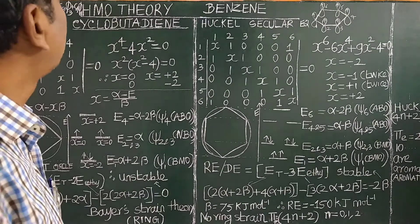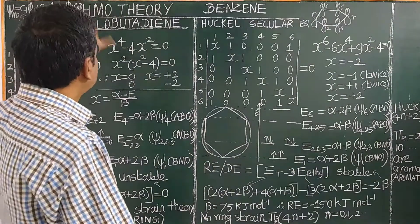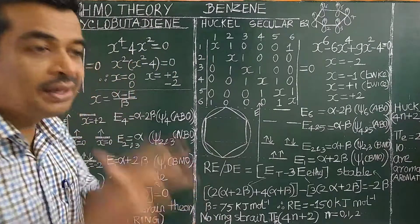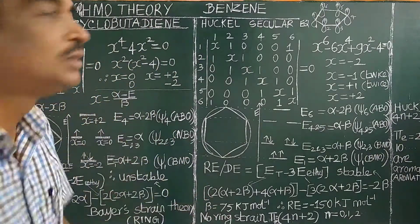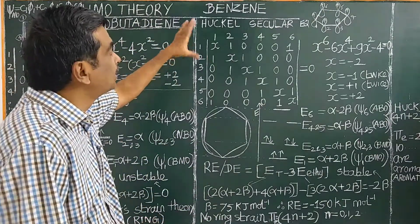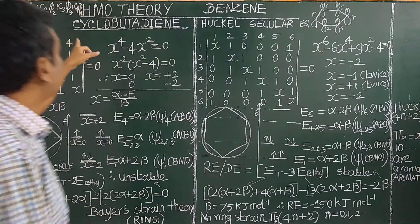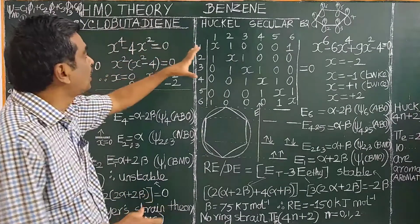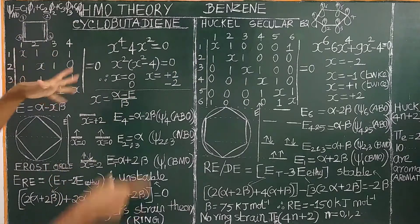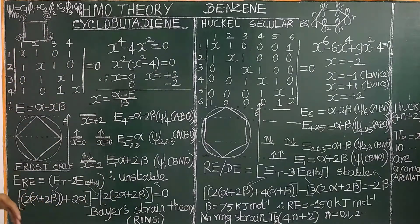Good morning. Let us study today HMO theory application to cyclic conjugated systems. For example, cyclobutadiene and benzene. We have earlier studied 1,3-butadiene. In this, we will study the cyclic unsaturated systems.